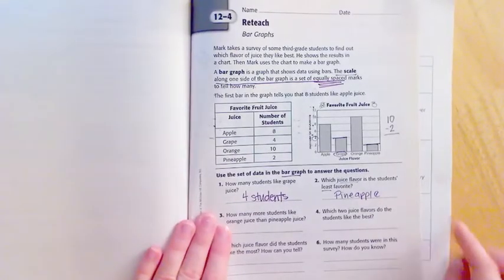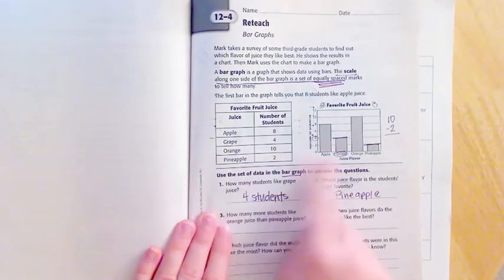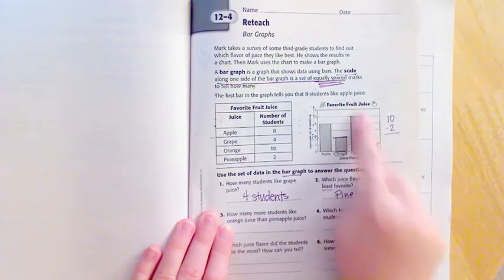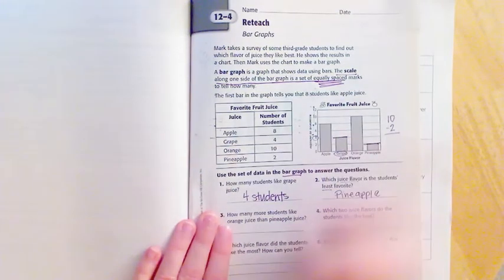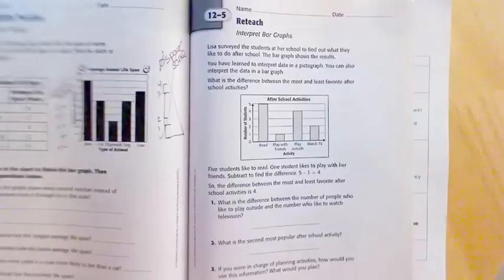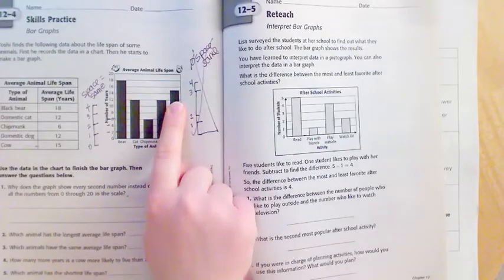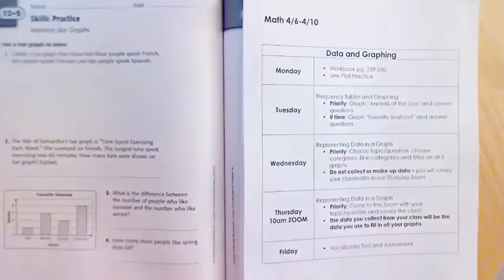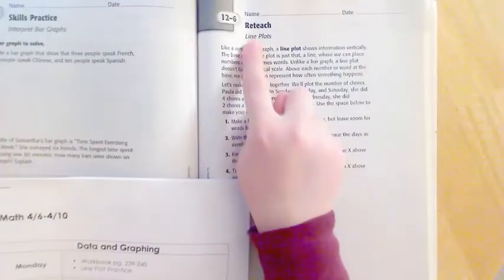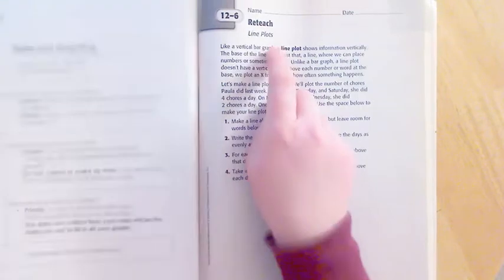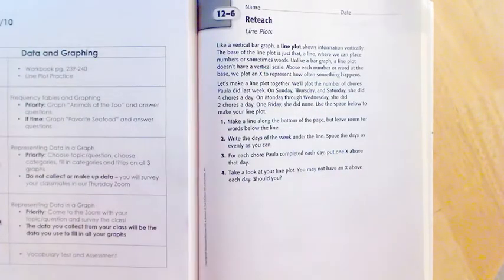Then on Friday we did bar graphs where we're showing information using rectangular bars. Sometimes they go up, sometimes they go sideways. Now the third one we are doing is called a line plot, which is very similar to what it sounds - it is a line.